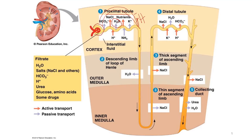Cells of the transport epithelium secrete hydrogen ions into the lumen of the tubule, and also synthesize and secrete ammonia, which acts as a buffer to trap hydrogen ions in the form of ammonium ions. The more acidic the filtrate is, the more ammonia the cells produce and secrete. The proximal tubule also reabsorbs about 90% of bicarbonate ions from the filtrate.